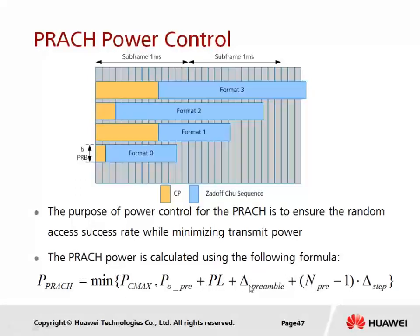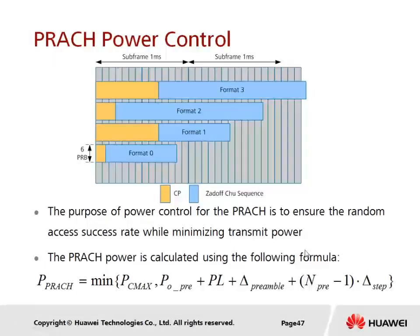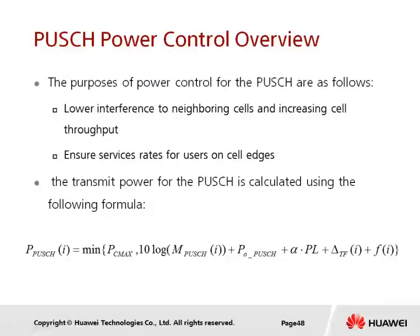If the first transmission fails, the UE must increase the preamble power for the next transmission. The power ramp-up step is called delta step. N_preamble is the number of the preamble transmission attempt, so for the second attempt that is 2 minus 1, ramping up power by one step. This is the complete formula for PRACH uplink open loop power control, where all values are based on UE estimation without any feedback from the eNodeB.